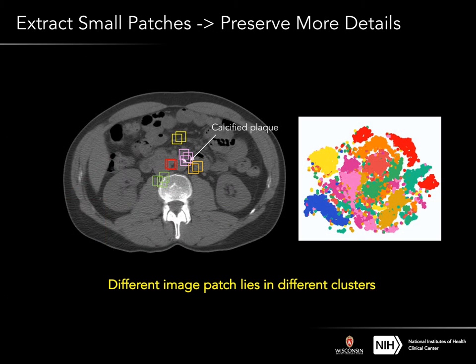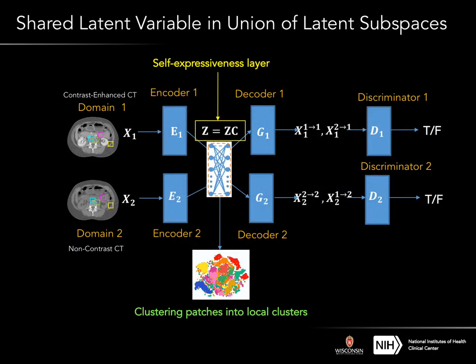In order to preserve small, tiny structures such as calcified plaque, we propose two solutions. First, we propose to extract small-size image patches from the full-size image. After extracting these patches, we found that the small image patches reside in different local clusters instead of a single latent subspace. Based on this finding, we change the shared single latent subspace model to a union of subspaces model, which constrains the small image patches to reside in different local clusters.